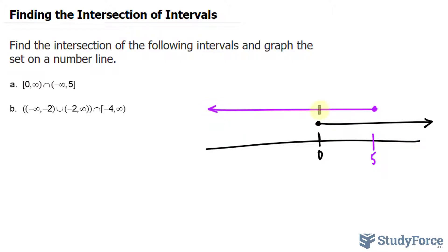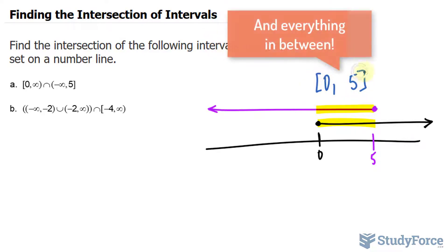This means that only this part right here is where these two sets intersect. I'll write down, it can be zero, and it can be five. Notice that I'm using the square brackets as opposed to parentheses.